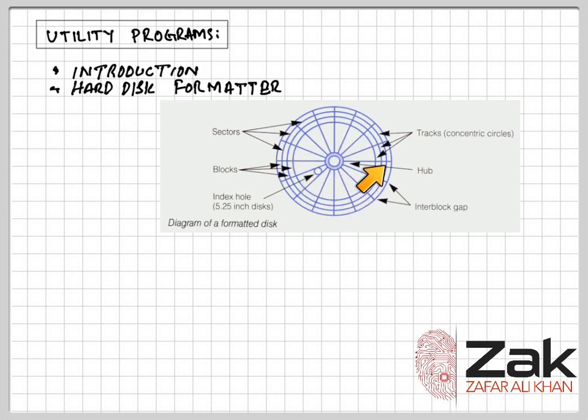These are the gaps between the blocks. So that is the arrangement. Afterwards, the system creates file allocation table, or a table which is sometimes called NTFS - New Technology File System for Windows - and keeps the data about the files stored over this disk in that table.